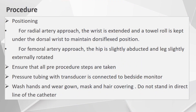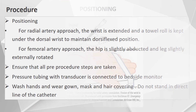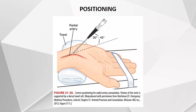Coming to the procedure, we have to position the patient. For the radial artery approach, the wrist is extended and a towel roll is kept under the dorsal wrist to maintain a dorsiflexed position. For the femoral artery approach, the hip is slightly abducted and the leg slightly externally rotated. We ensure all pre-procedure steps are taken and all equipment is arranged. The pressure tubing with the transducer is connected to the bedside monitor, and we wash hands and wear gloves, mask, and hair covering. We should not stand in direct line of the catheter. The towel roll is kept in the dorsal aspect of the wrist to expose the radial artery better.